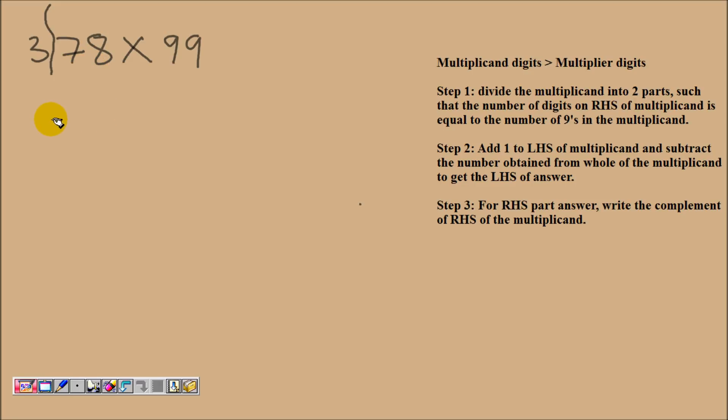In the second step, we have to add 1 to the LHS part. That is, we will add 1 to this 3, so 3 will become 4. And then we will be subtracting this 4 from this whole number 378. So on subtracting 4, this number will become 374.